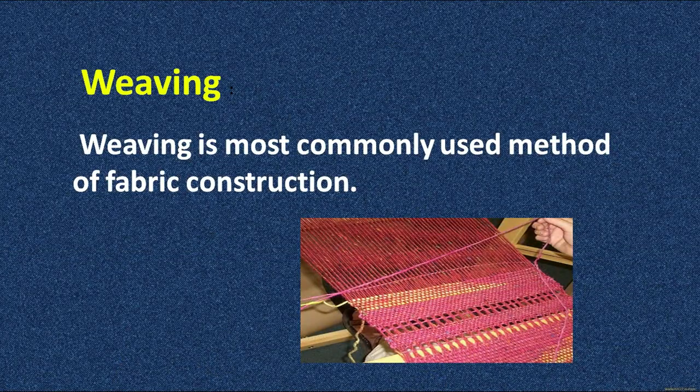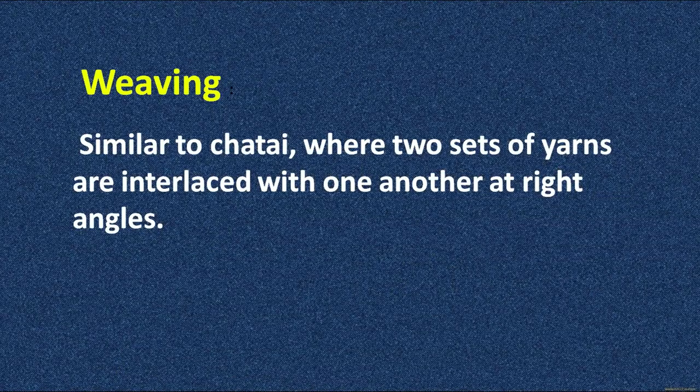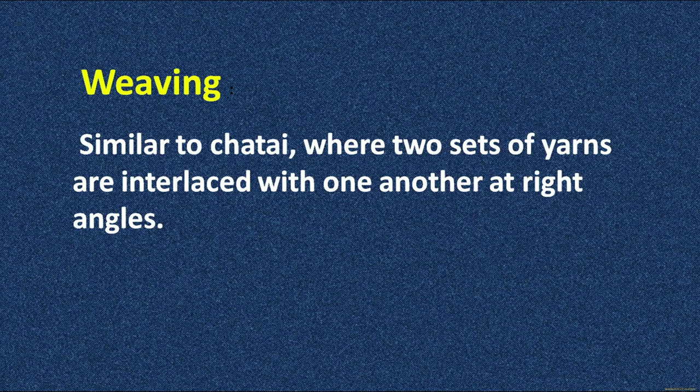Let us first discuss about weaving. Weaving is the most commonly used method of fabric construction. Most of the clothes available in the market are made by the weaving process. If you look closely at a chatai or a jute floor mat, you will see there are two sets of yarns — longitudinal and vertical — that intersect at right angle, one going vertical and the other going horizontal. When they intersect each other at the right angle, the pattern that is formed is called weaving.